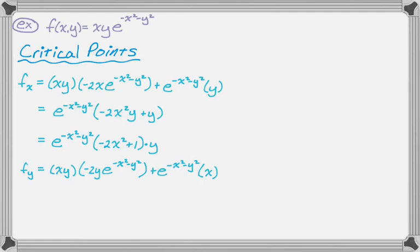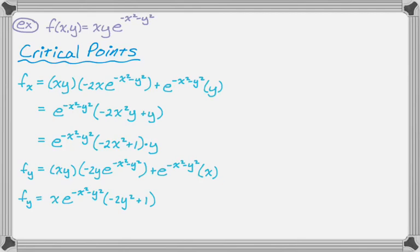For partial y, using the same product rule approach: x·y times derivative of e^(−x²−y²) with y as the variable gives −2y·e^(−x²−y²), plus e^(−x²−y²) times derivative of xy with respect to y, which is x. This factors in basically the exact same way by symmetry: partial y = x·e^(−x²−y²)·(−2y² + 1). They're the same function — you just swap the x's and y's — which is going to be useful going forward.